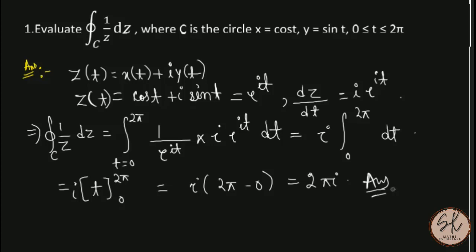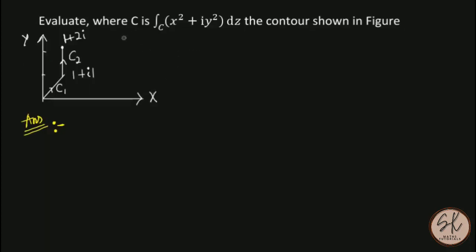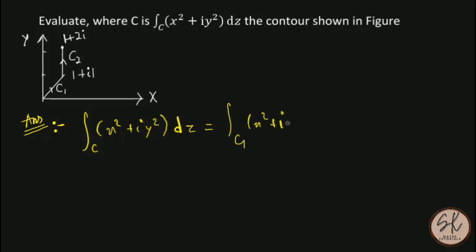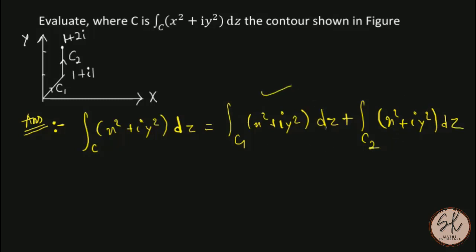The answer is 2πi. Now here is another question where C consists of C1 and C2. The integration along C of (x² + iy²) dz equals the integration along C1 of (x² + iy²) dz plus the integration along C2. Its final answer is the sum of the values along path C1 and along path C2.